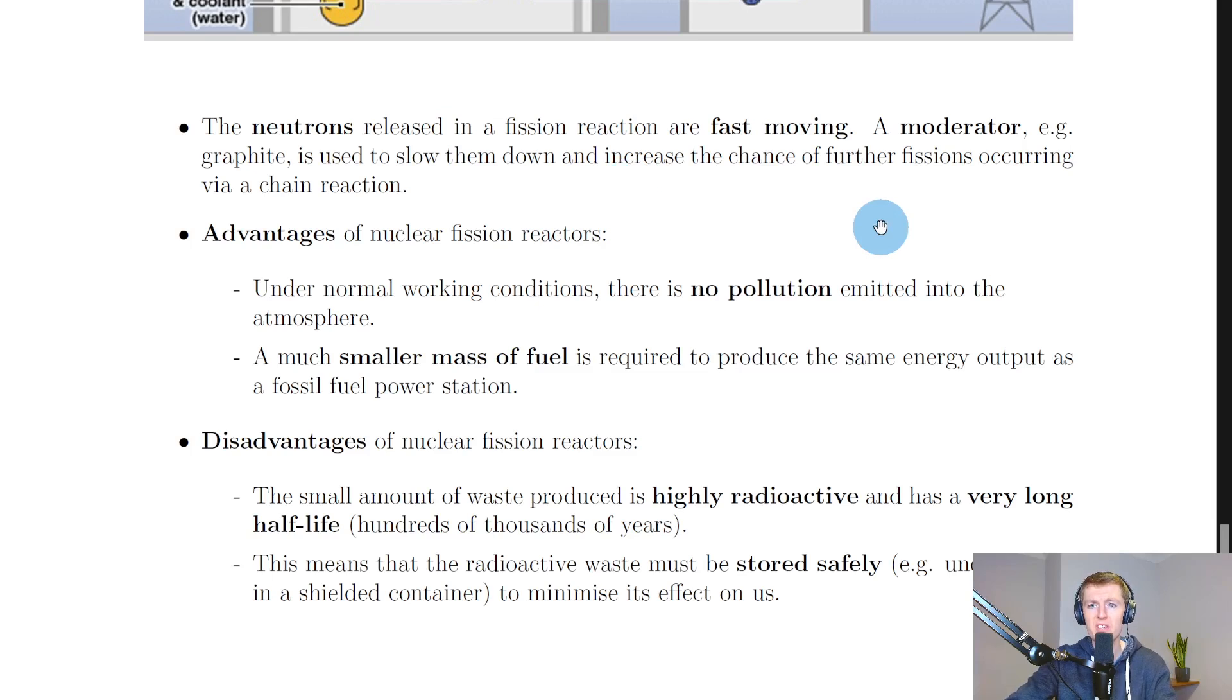Here we have a sort of zoomed in section of a nuclear reactor where we've got our control rods at the top. We've got these fuel rods here which are the blue strips that contain the uranium fuel, and then these sections in between are our moderator material. And remember, the purpose of the moderator is to slow down the neutrons.